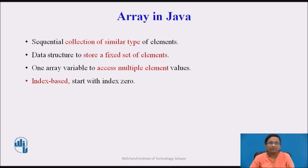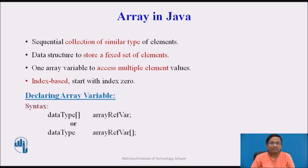Array is a collection of similar type of data elements. A Java array is an object which contains elements of similar data type. Array can be accessed using a single variable name, and an index is used to access individual elements from a set of elements. Array is a data structure used to store a fixed set of elements in sequential order. Array elements are accessed using an index, and the index starts with zero.